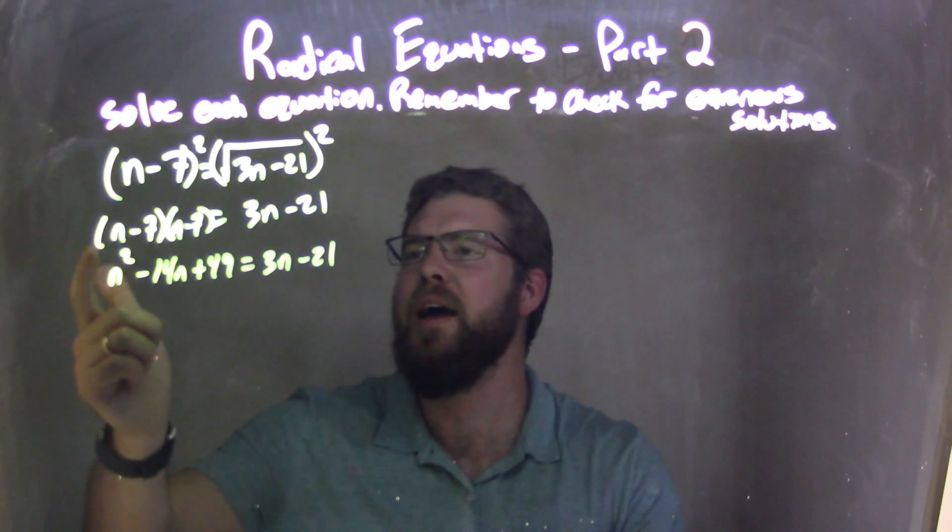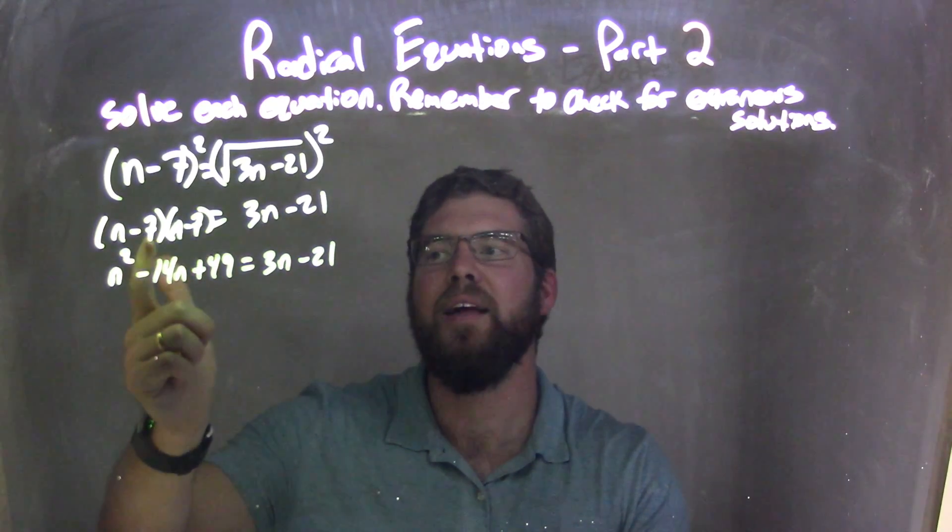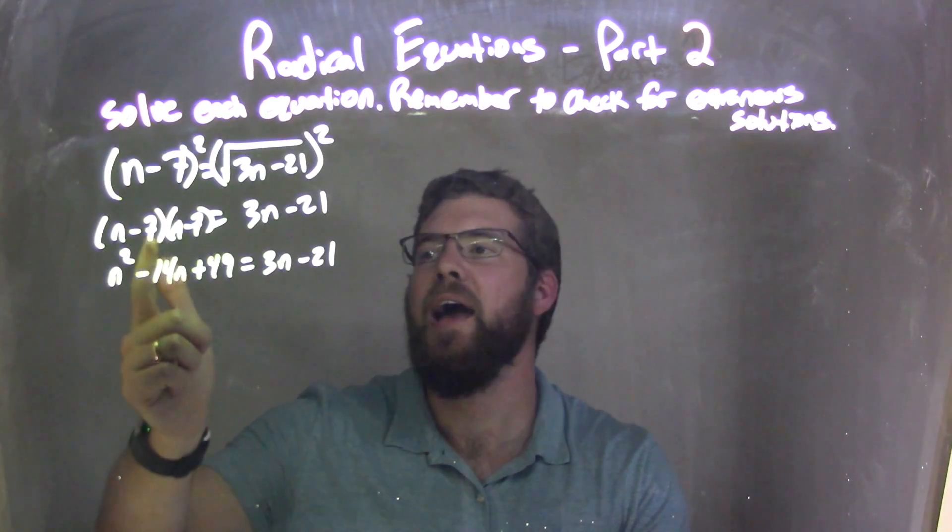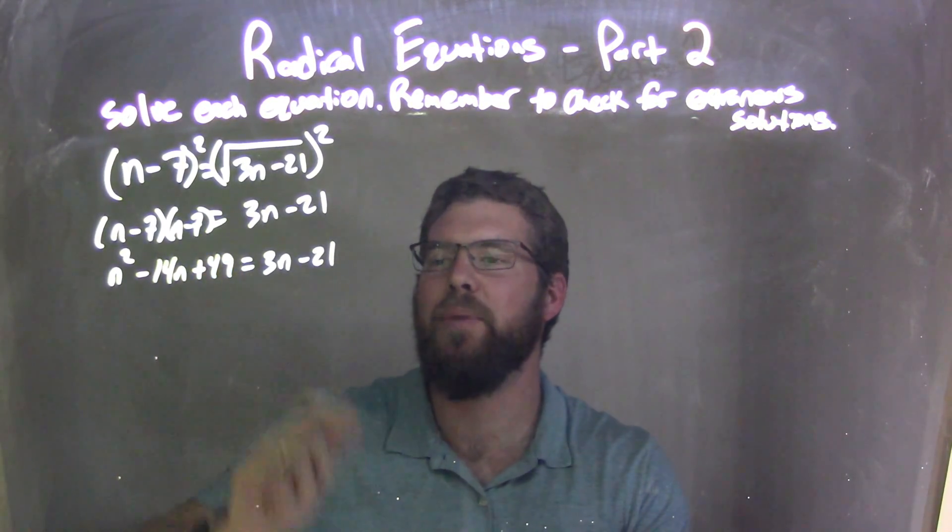n times n is n squared, n times negative 7 is negative 7, negative 7 times n is negative 7, added together gets you the negative 14n, and negative 7 times negative 7 is positive 49.